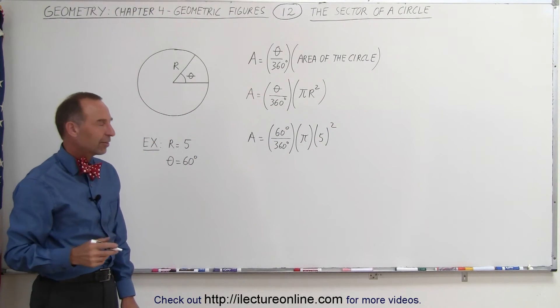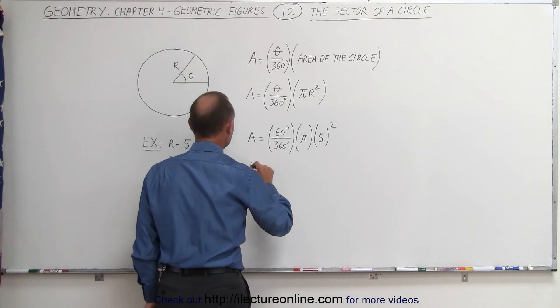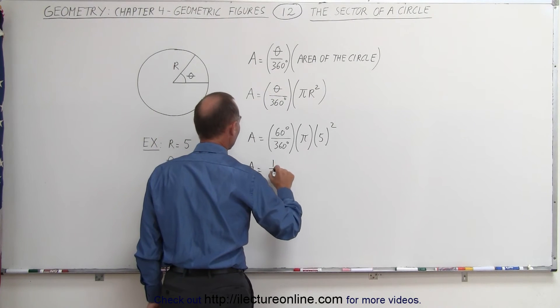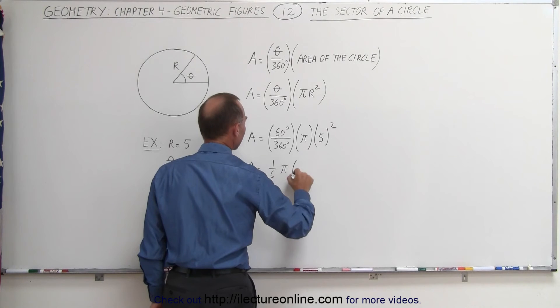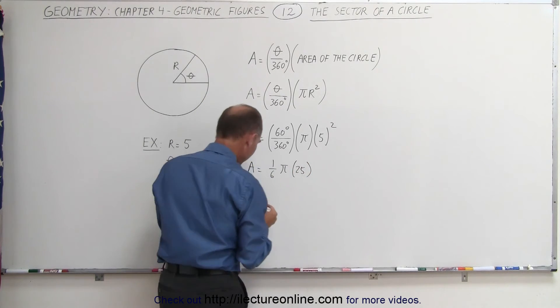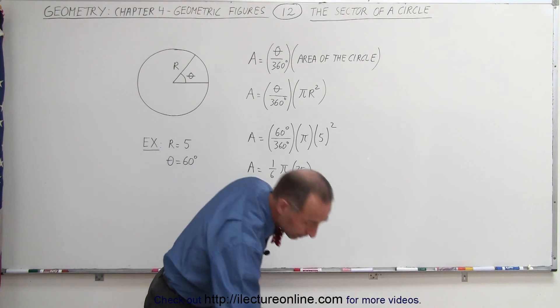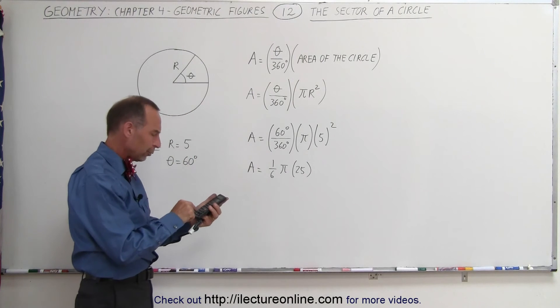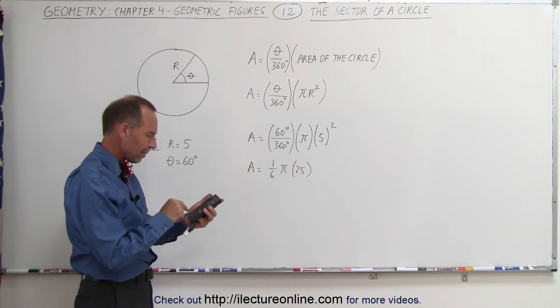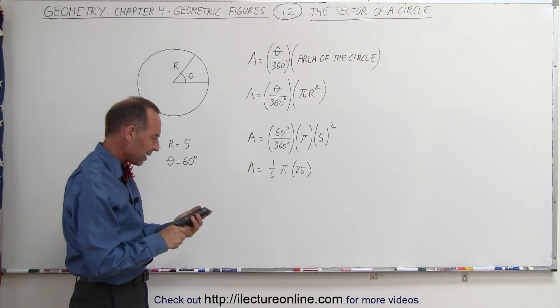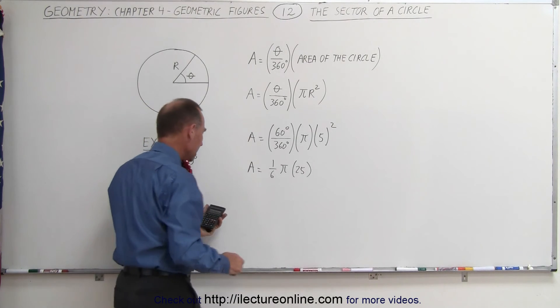Okay, 60 divided by 360, that's 1/6. So we can say that A is equal to 1/6 times π times 25, and at that point you probably want to grab a calculator. 25 divided by 6 times π, and that ends up being 13.09.